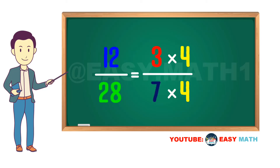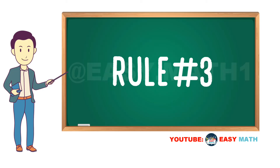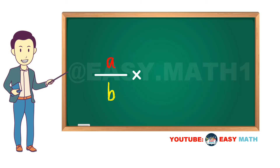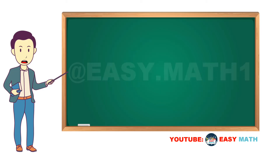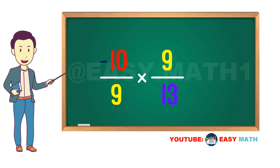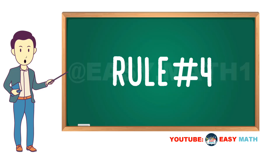Rule number three: a divided by b, multiplied by b divided by c, cancels to a divided by c. For example, negative ten divided by nine, multiplied by nine thirteenths, is equal to negative ten divided by thirteen.